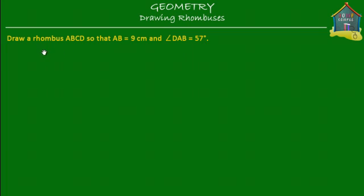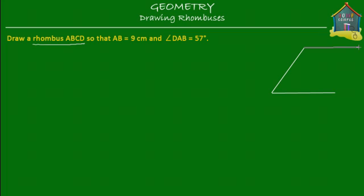Now what do we know about a rhombus? A rhombus is a parallelogram with equal sides — we learned that in a previous lesson. So all that a rhombus is, is a parallelogram that has equal sides. So if one of the sides is 9 cm, then all the other sides will also be equal to 9 cm.